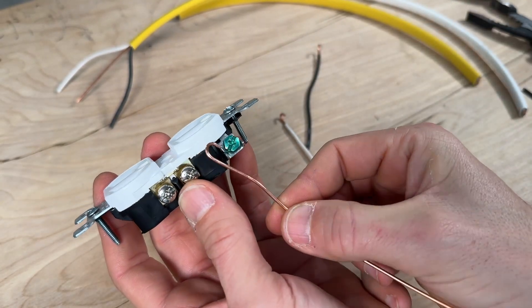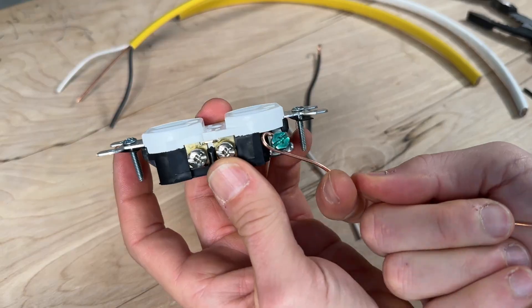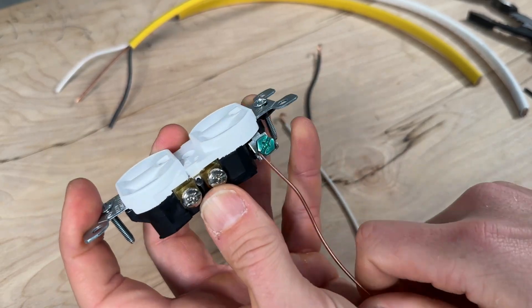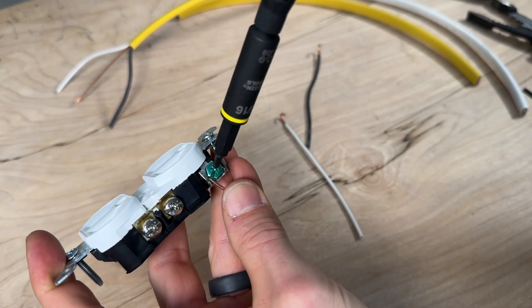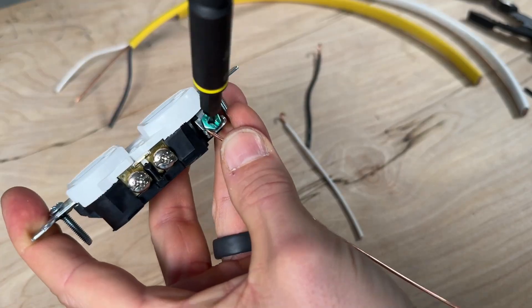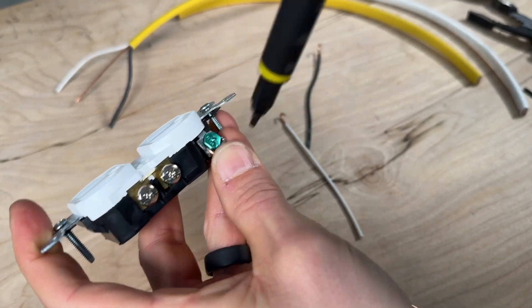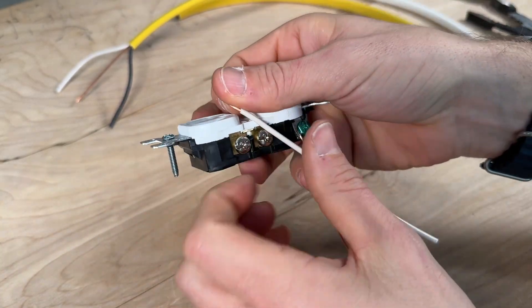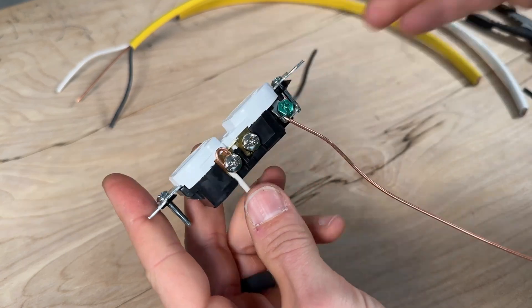Make sure you're going in the clockwise direction starting off with your ground. That is best practice and something I haven't done for many years, so I'm trying to get better at it. Then you'll tighten that down on your bare ground, making sure it's cinched tight to the screw terminal and does not push back out.